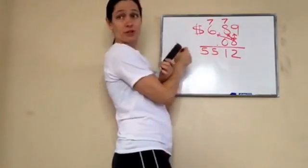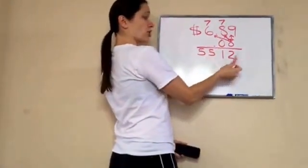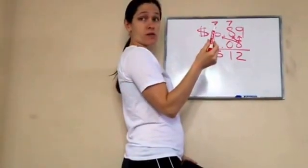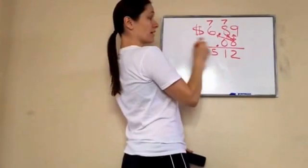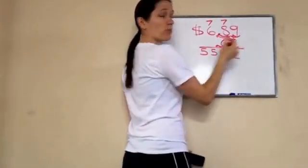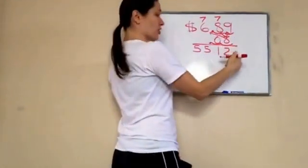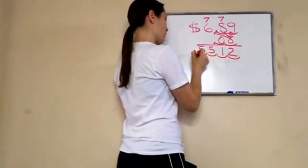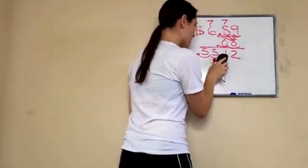So now my answer is 5512, but remember the decimal point. There are one, two places, three, four places after the decimals, right? So you start here and you go one, two, three, four.